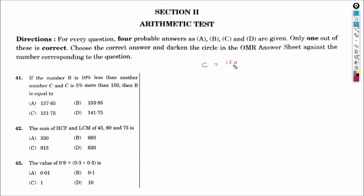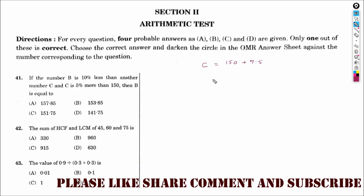C is 5% more than 150. 5% of 150 is 7.5, because 10% is 15, and if we divide it by 2, we get 7.5. Therefore, 5% of 150 is 7.5, and C will be 157.5.